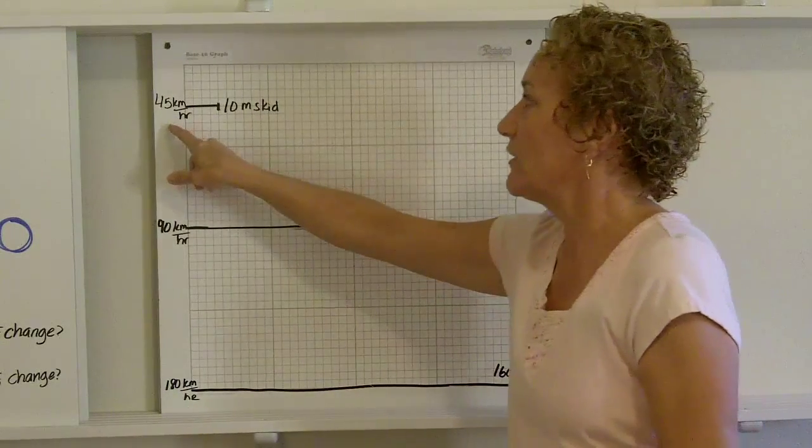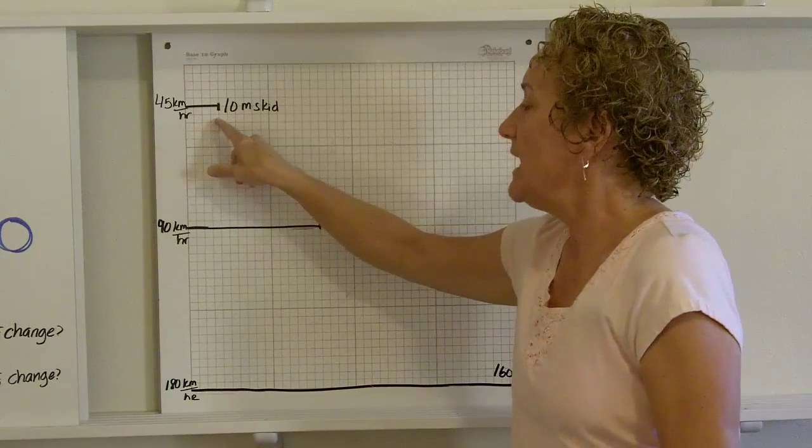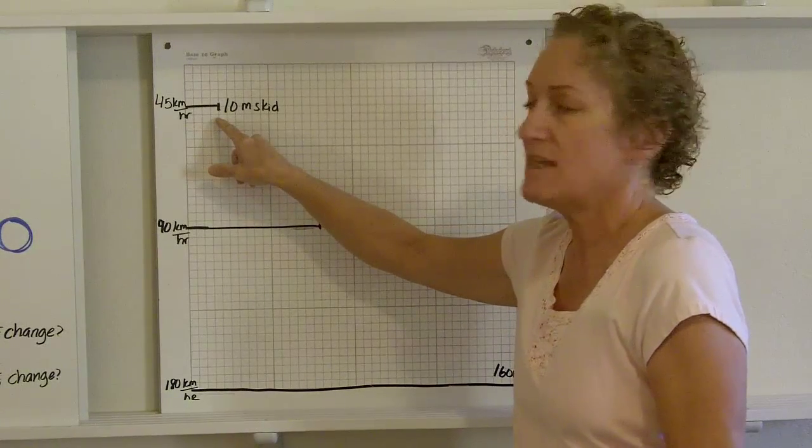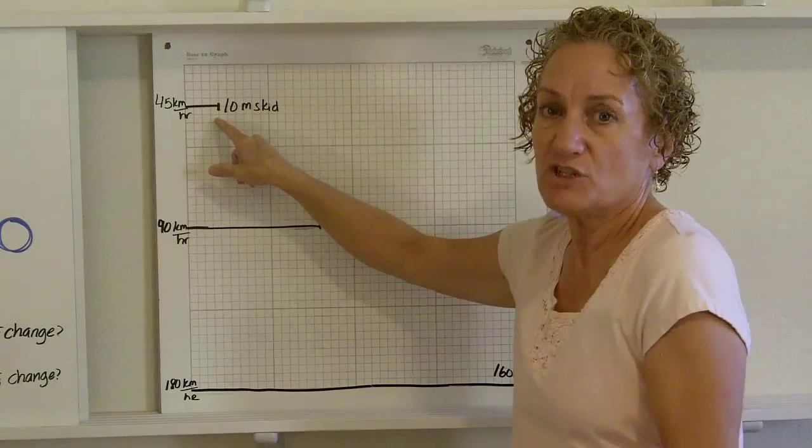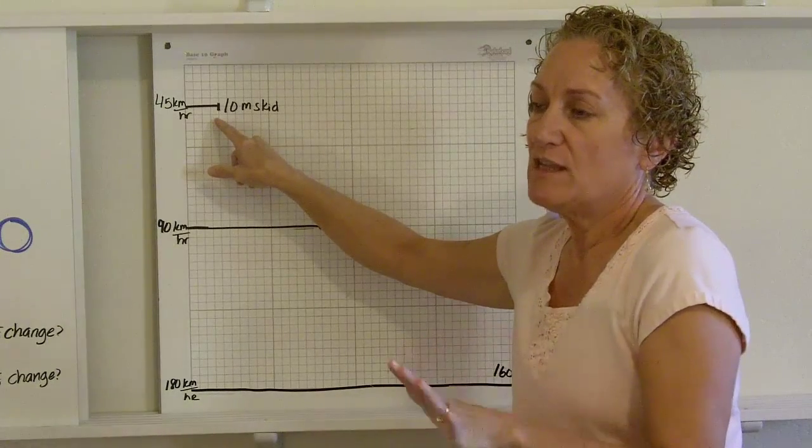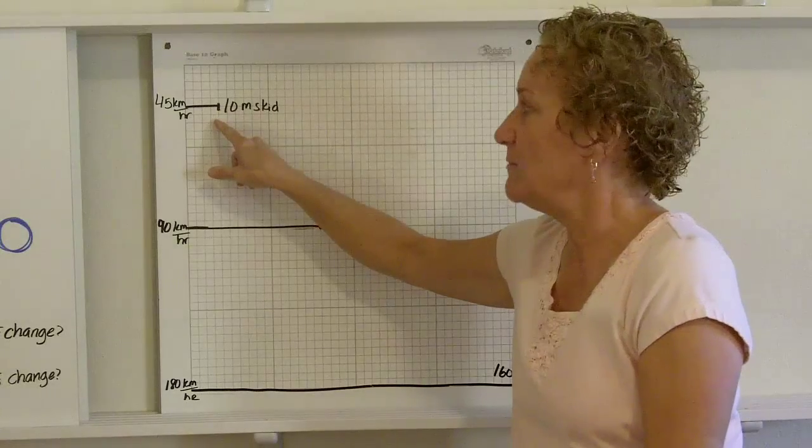If you have a car traveling at 45 kilometers per hour, it takes about 10 meters. There's about a 10 meter skid. Let's pretend like you're at 45 kilometers per hour, you hit the brake, the car skids 10 meters.